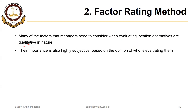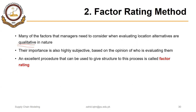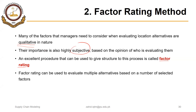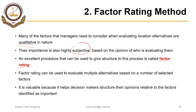Many of the factors that managers need to consider when evaluating location alternatives are qualitative in nature. Their importance is highly subjective based on the opinion of who is evaluating them. An excellent procedure that can be used to give structure to this process — to give weight to these qualitative or subjective factors — is called Factor Rating. Factor rating can be used to evaluate multiple alternatives based on a number of selected factors.